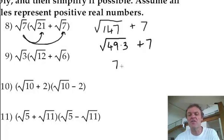Still got that. What's a square root of 49? That's 7. You're still left with the root 3. You're still left with a 7. And that's it.